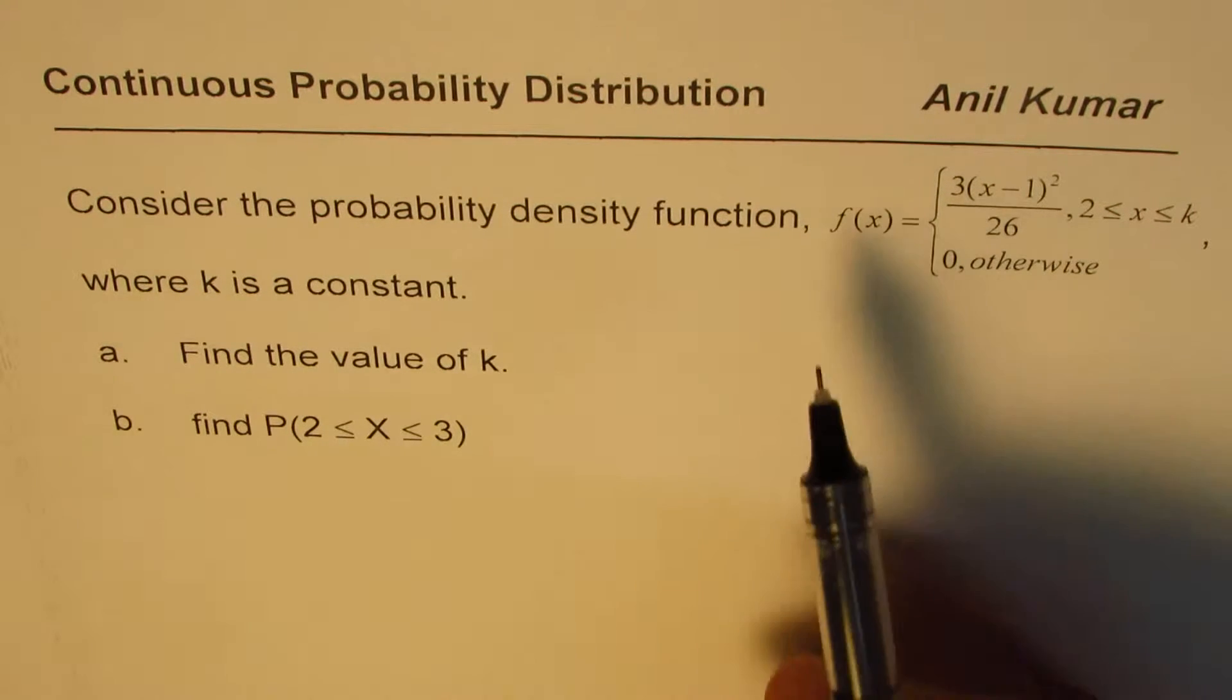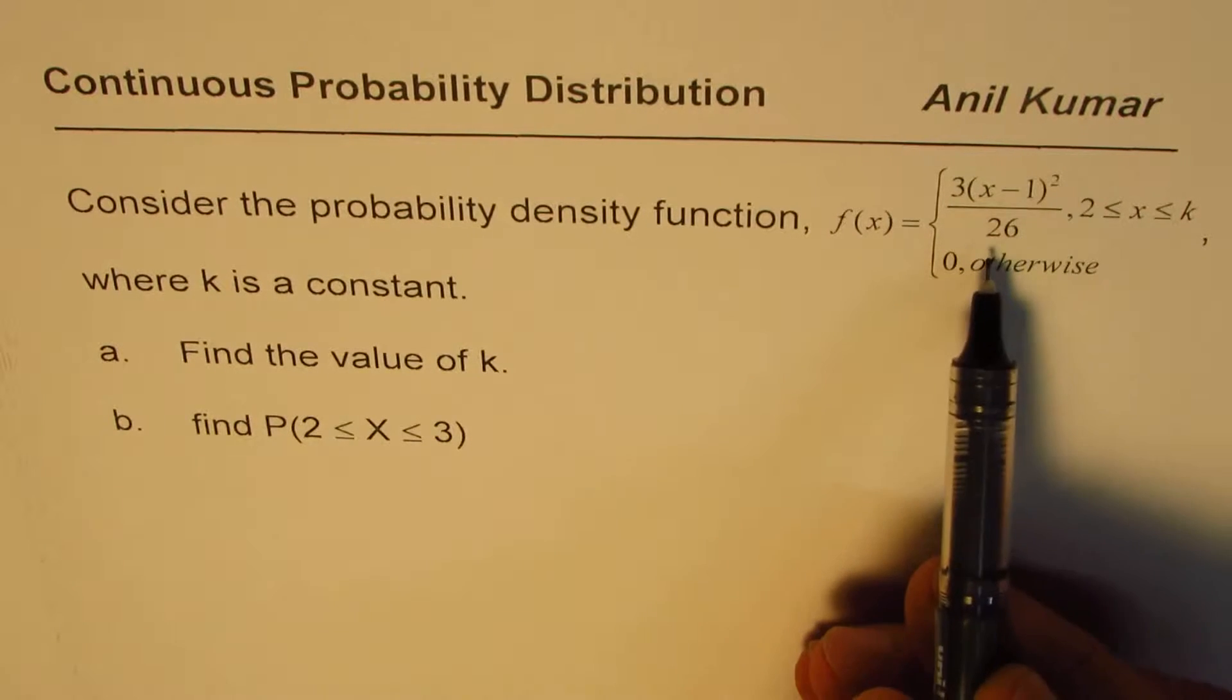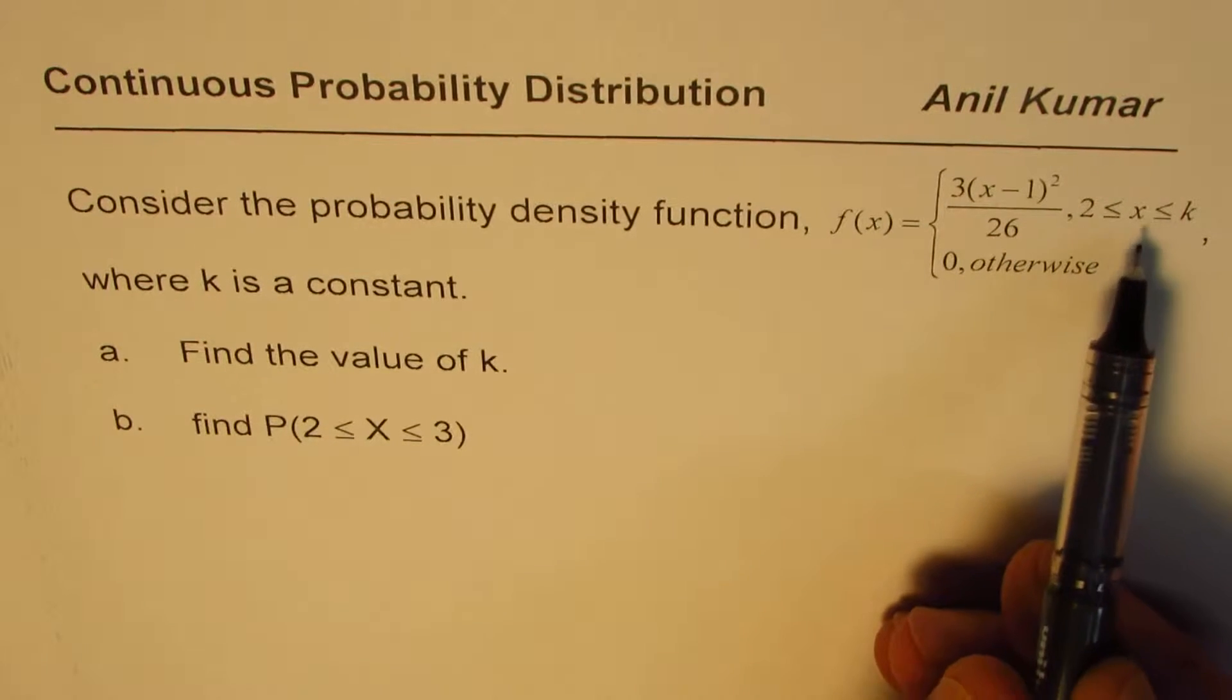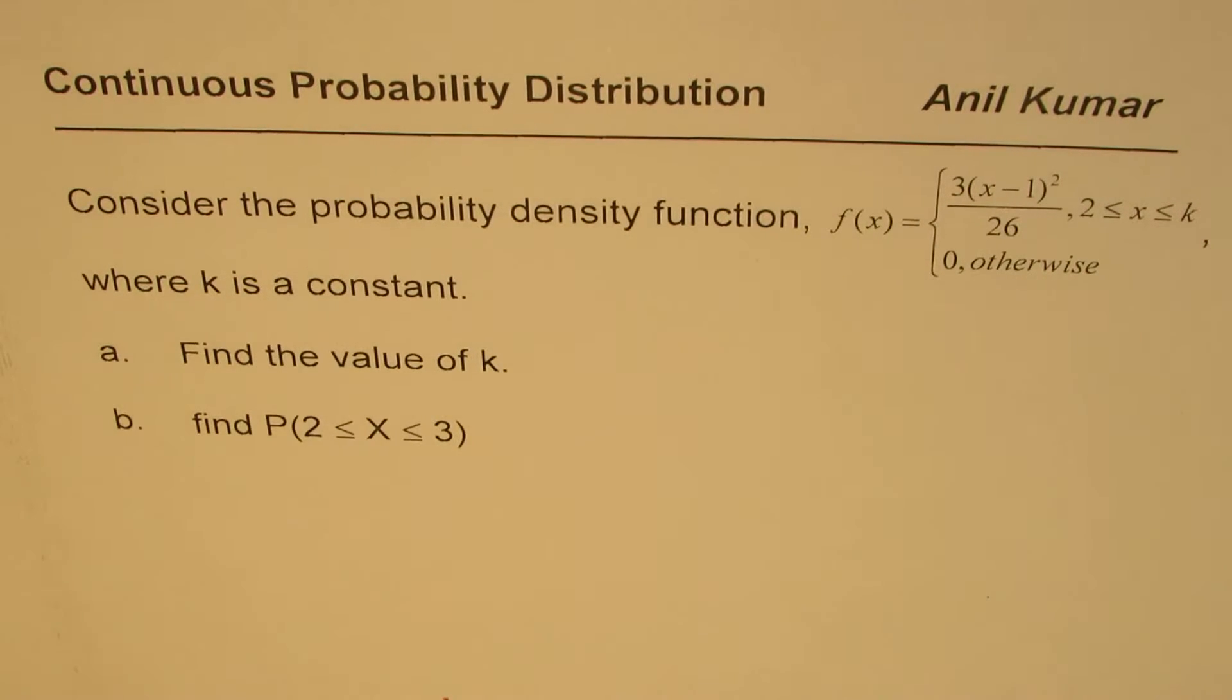Consider the probability density function f(x) equals 3(x-1)² divided by 26, when x is between 2 and k, and 0 otherwise, where k is a constant.